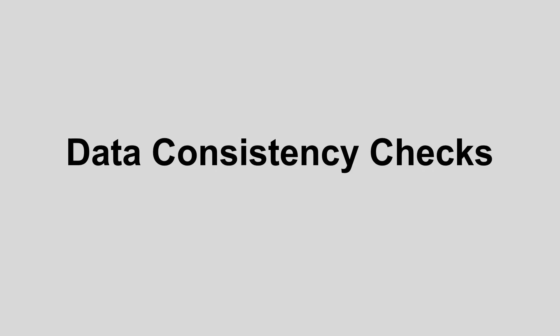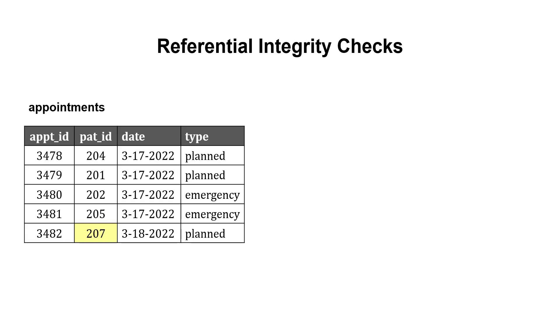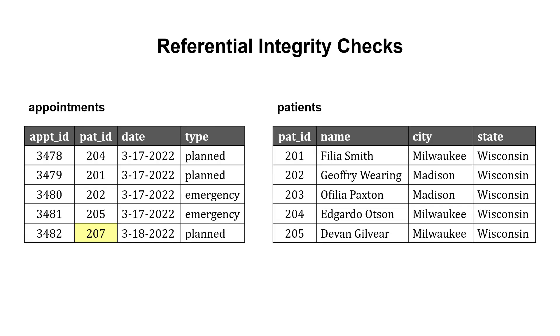Another quality technique we could use is data consistency checks. One example is the referential integrity check. Let's say we have appointments data and patient data at a hospital. We want to make sure that for every patient ID in the appointments table, there's actually a patient that exists in the patients table. There shouldn't be a patient ID in the appointments table that doesn't exist in that patients table.